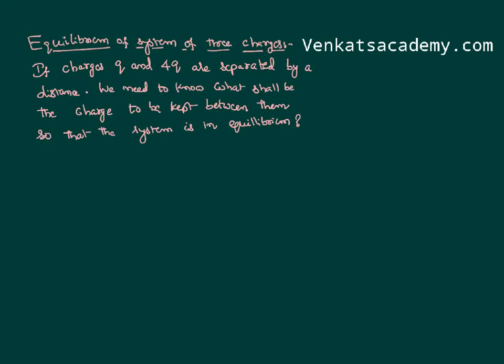Hello everyone, today in this post I want to talk about equilibrium. Equilibrium of a system means every charge shall experience a zero force. As a reference, I am taking two charges q and 4q separated by a certain distance. We need to know where I have to keep a third charge, what is its magnitude, what is its nature, and what shall be the charge so that the entire system is in equilibrium.